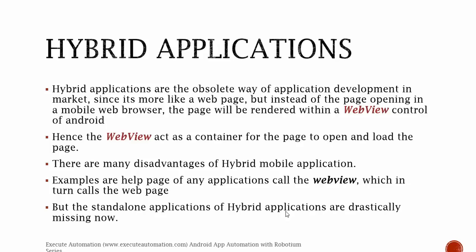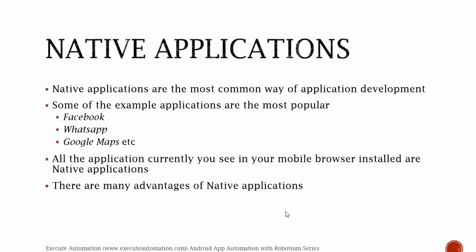Native applications are the most common way of application development currently in the market. Examples include popular apps like Facebook, WhatsApp, Google Maps, and virtually every other application you can name. Currently everything is native applications — no hybrid applications are in development anymore.